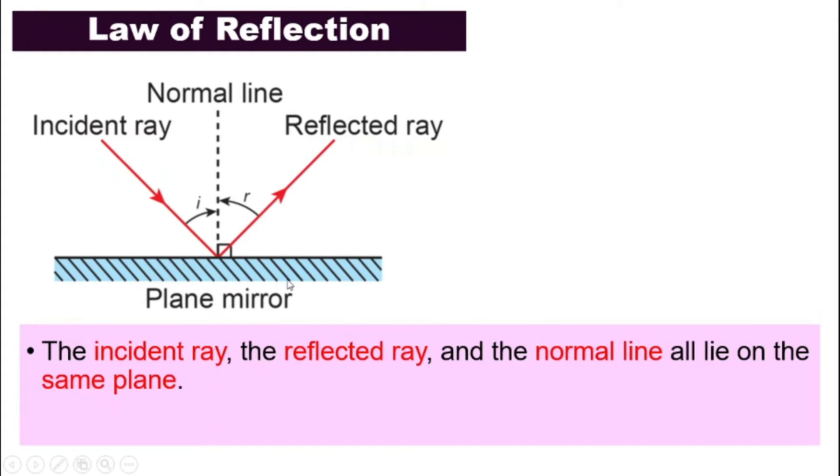The reflected ray is the light that is bouncing off the mirror because of the incident ray. And how about the normal line?